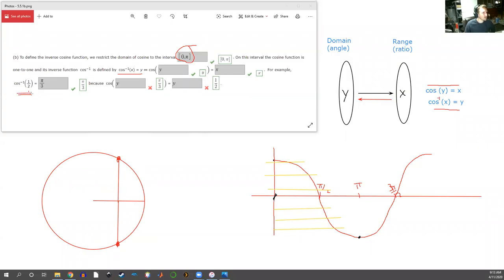So the question now becomes: cosine inverse of one half is what angle? So what angle gave us this value of one half as an x-coordinate?